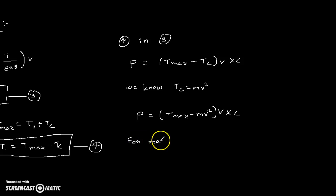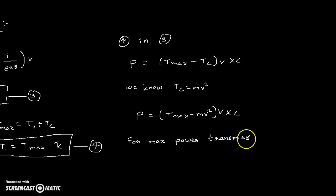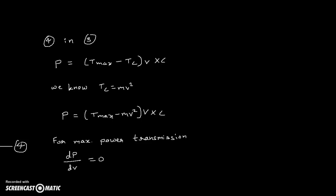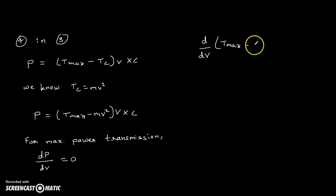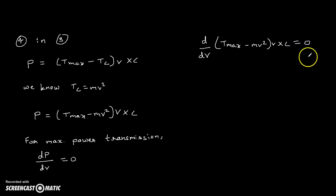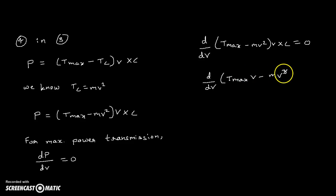For the maximum power transmission condition, the derivative of power with respect to velocity must equal zero. So we write d/dv of [(T_max minus mv²) × v × C] = 0. Since C is constant, it moves to the right side and remains zero. Expanding the bracket: d/dv of [T_max × v minus mv³] = 0.